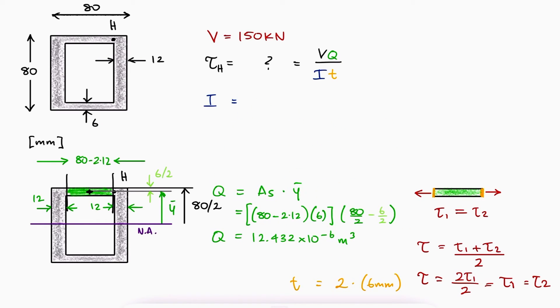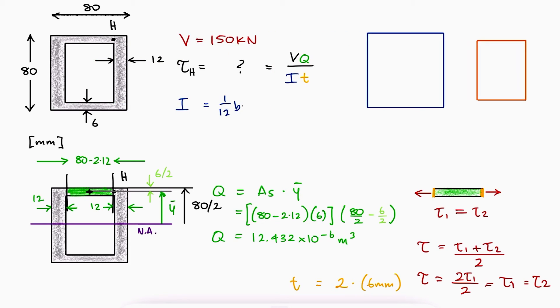And finally, the second moment of area would be that of a square minus a rectangle. The dimensions for the square are 80 and the dimensions for the rectangle 56 and 68.